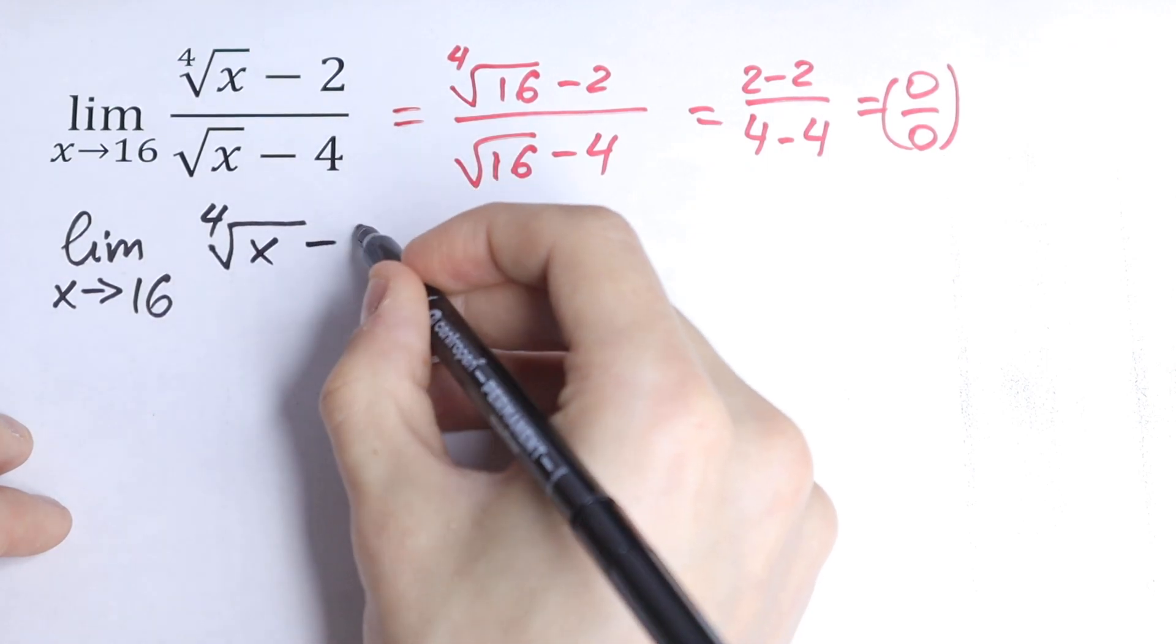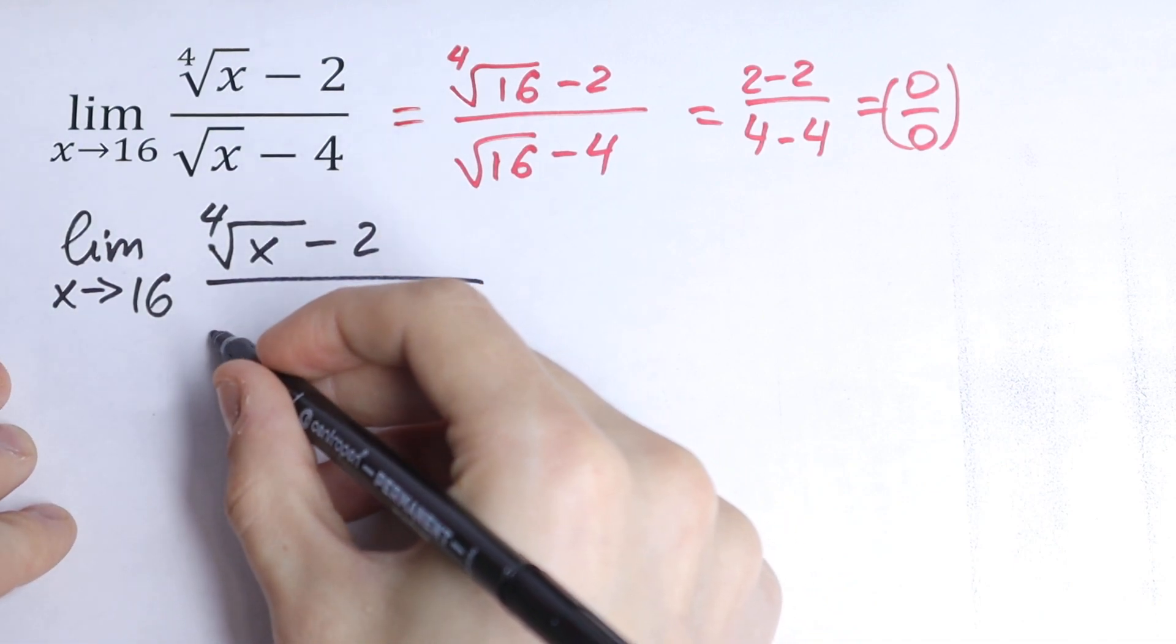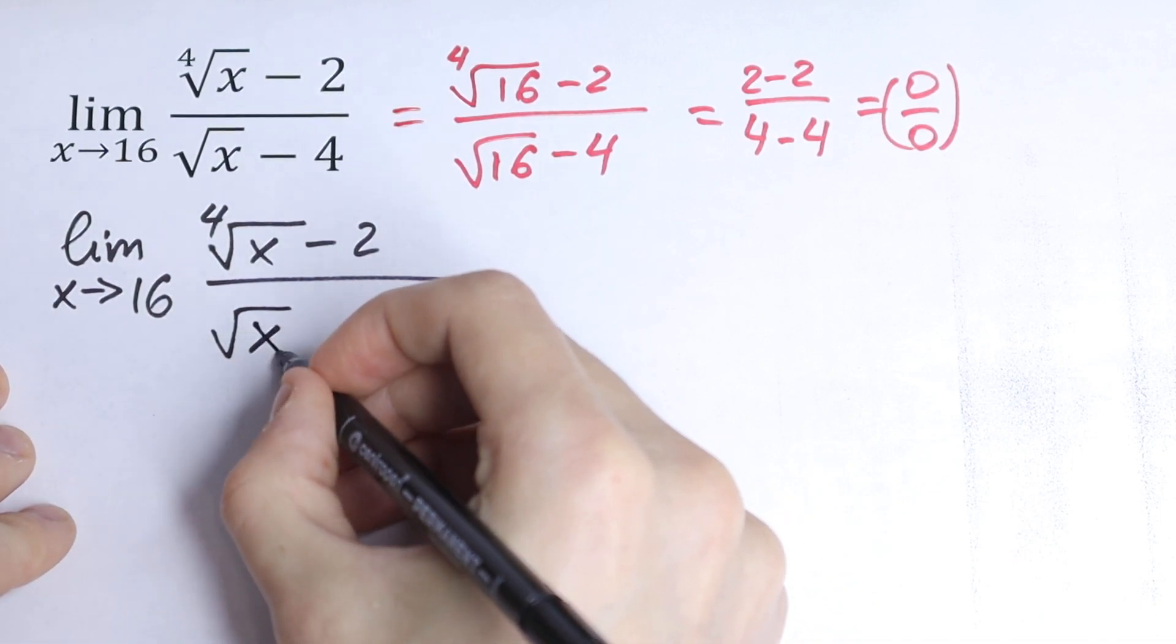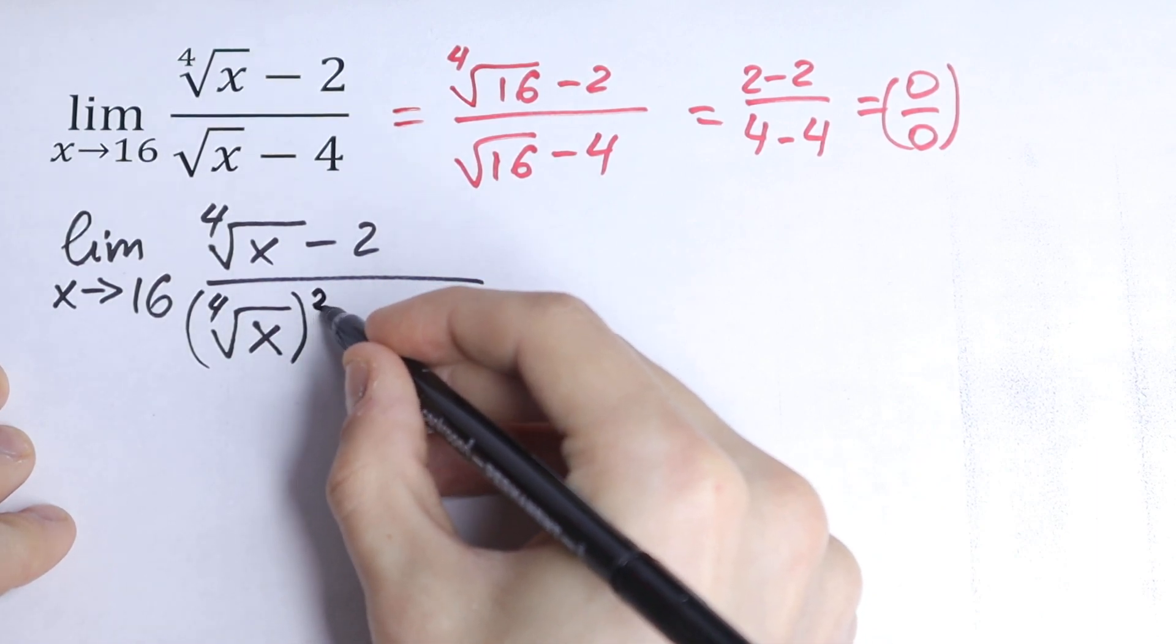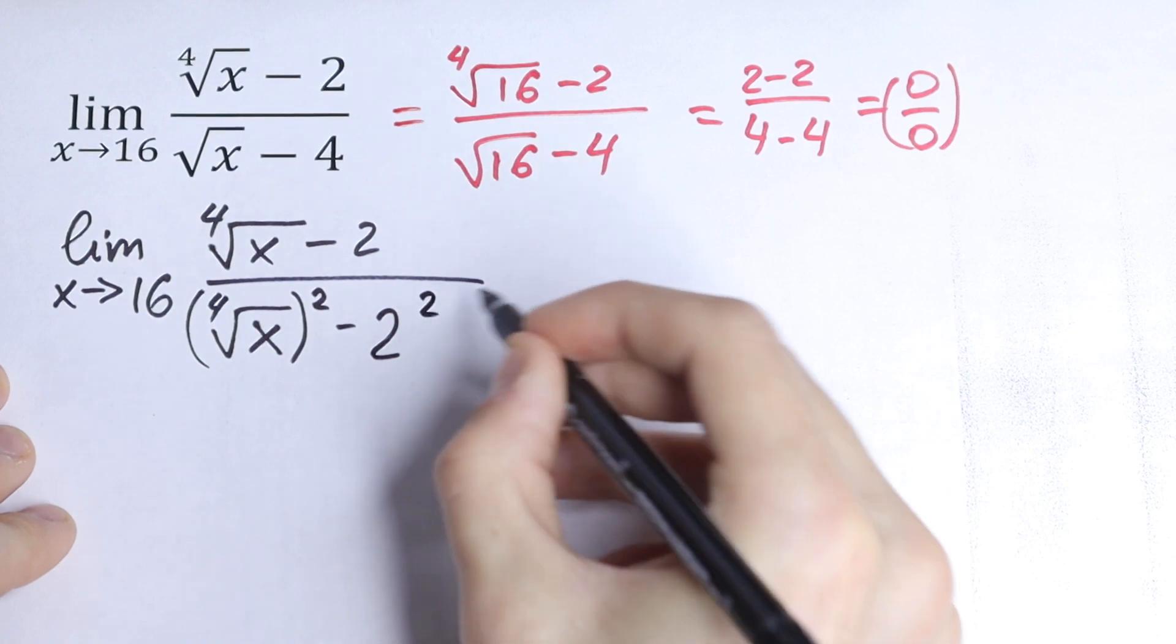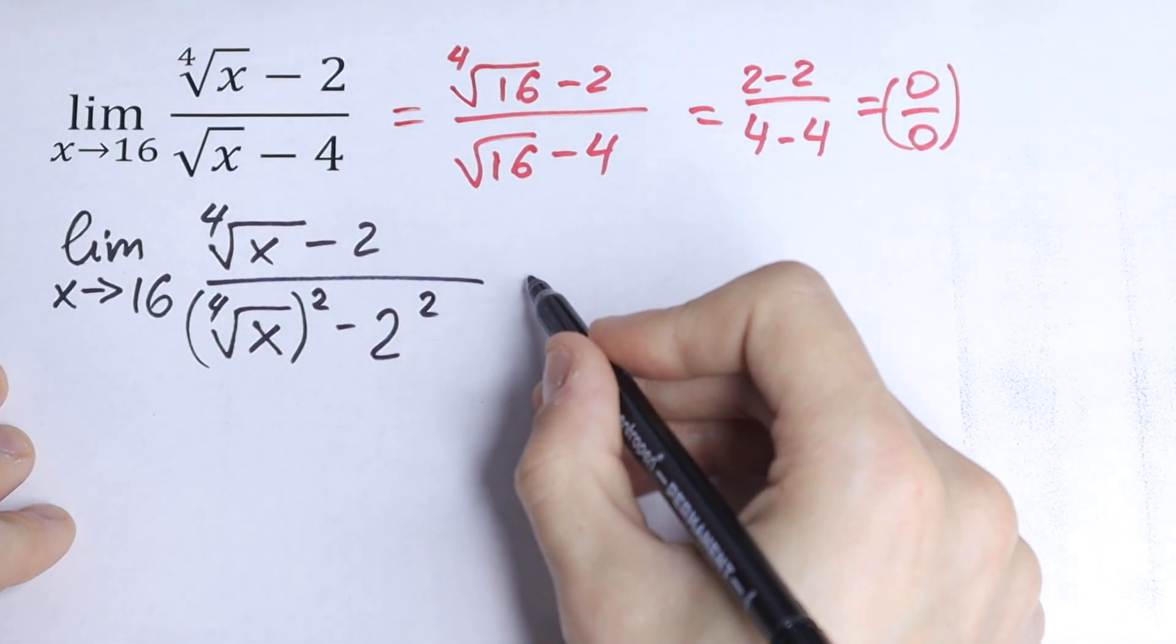The square root of x we can write as fourth root of x to the second power minus 2 squared. And here we can split it into an identity.